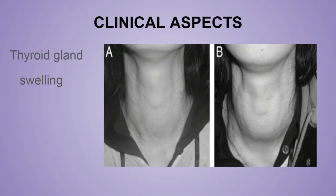When you swallow anything, if there is a thyroid gland swelling, the thyroid gland and its swelling will actually move along with deglutition. Why? Because the thyroid gland is attached to the cartilage of the larynx with the help of the ligament of Berry. So, because of this attachment by the ligament of Berry between the thyroid gland and the cartilage of the larynx, there is movement of the thyroid gland and its swelling during deglutition.